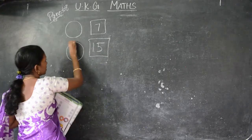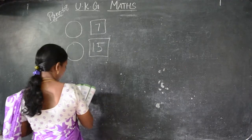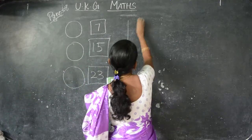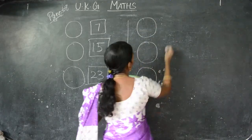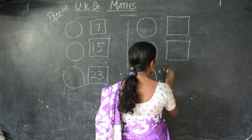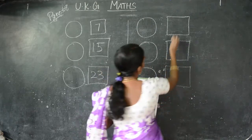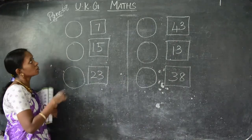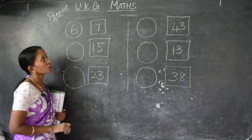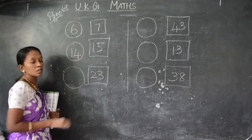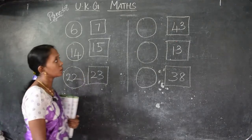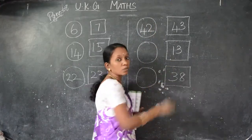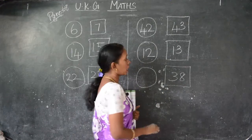We set the answer in the circle. The numbers are 7, 15, 23, 43, 13, 38. Now we have to find out and write children. Before 7, what will come? 6. Before 15, what will come? 14. Before 23, 22. Before 43, what will come? 42. Before 13, 12. Before 38, 37.